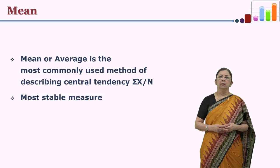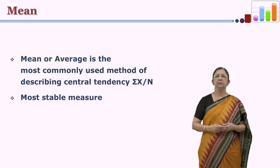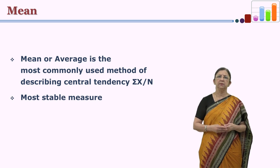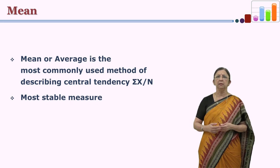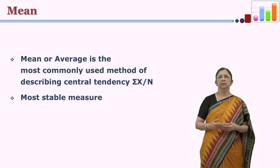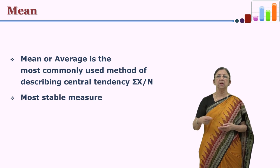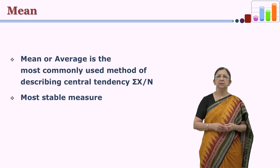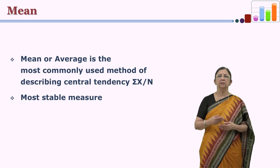Let us see univariate analysis and the measures of central tendency. There are generally three types of central tendency measures: mean, median, and mode. Mean is also called average — it is a mathematical average. Average means we add up all the scores and divide by the number. So generally it is denoted as summation of x upon n, which gives us the mean.